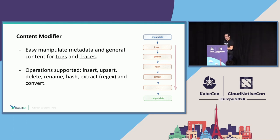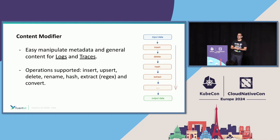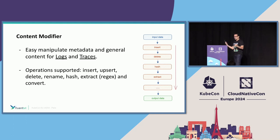The content modifier processor operates on top of logs and traces. For logs, it operates on metadata or attributes plus the body content; for traces, on the spans. The operations supported are: insert, upsert, delete, rename, hash, extract, and more. Someone asked this week: why do you have a hash function? There are many use cases — especially in Europe with GDPR — where you're collecting information but cannot send all data in plain text if you have sensitive data like social security numbers or user passwords. Hash works for that since it cannot be reversed.